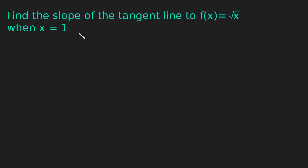Okay, we're going to do another example of finding the slope of the tangent line to a function. And here the function is the square root of x, and we want to find the slope of the tangent line to the square root of x when x is equal to 1.